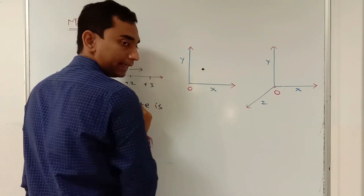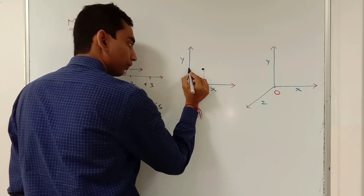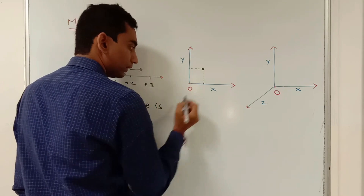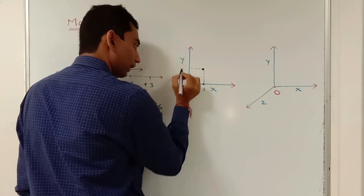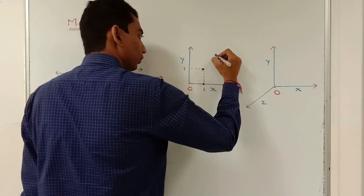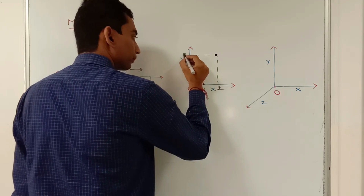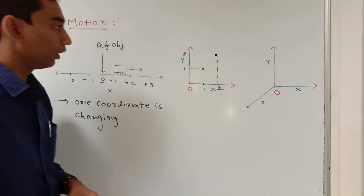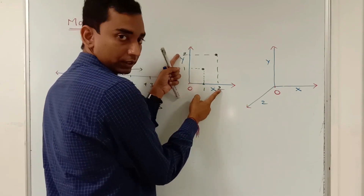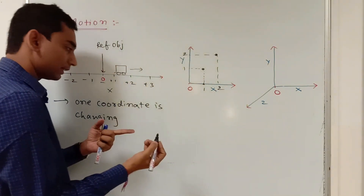Suppose there is an object — a fly or any object — and this object has two coordinate points: x equals one and y equals one. After some time this point reaches another location and the new coordinates are two and two. As time passes, both coordinates are simultaneously changing. So if two coordinates are changing, then the body is said to be moving in two dimensions.